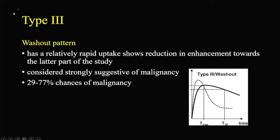The last is Type 3 — the one we are most concerned about — the washout pattern: rapid uptake and rapid washout. That is a feature of neoangiogenesis, which is a pattern of malignant lesions. There is a 29 to 77% chance of malignancy, but the percentage range is quite wide so it is not very sensitive or specific. This is just an add-on. As noted earlier, morphology takes priority over enhancement pattern.